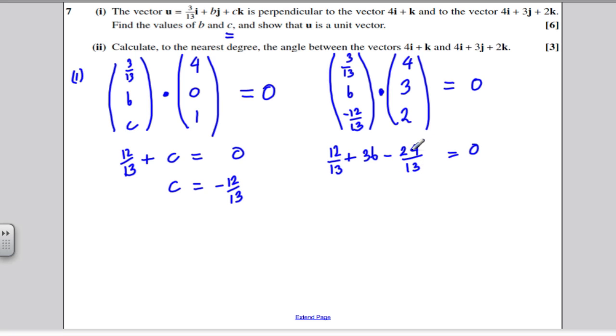12/13 take away 24/13 is negative 12/13. So 3B subtract 12/13 must be zero.